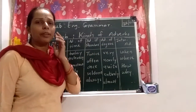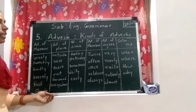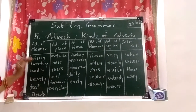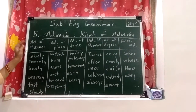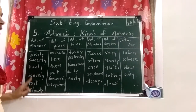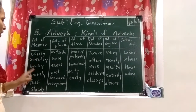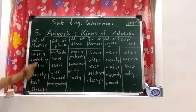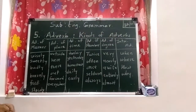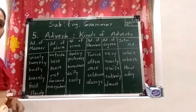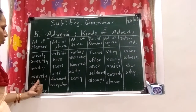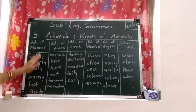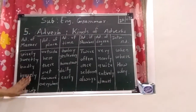Now there are six kinds of adverbs. The first is the adverb of manner, which shows how the action is done. Examples: wisely, sweetly, badly, bravely, fast, slowly. For example: Peter acted bravely. The juice tasted sweetly. She writes badly. Soldiers fought bravely. The adverb of manner shows how the action is done.